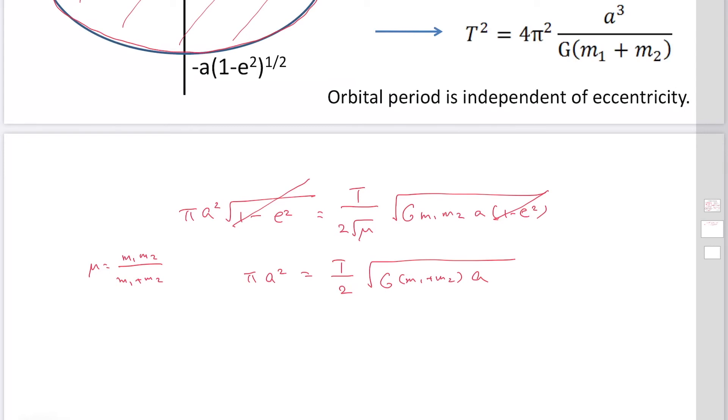Then take the square of both sides of the equation: π²a⁴ = T²/4 × G(m₁ + m₂)a. And then a is going to be cancelled. One of the a is cancelled.